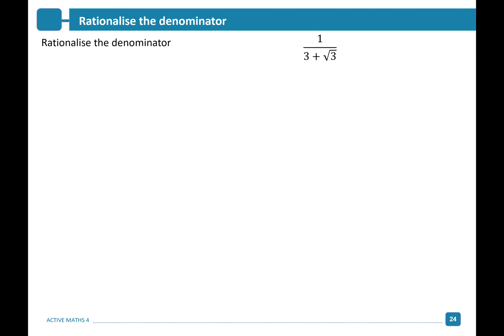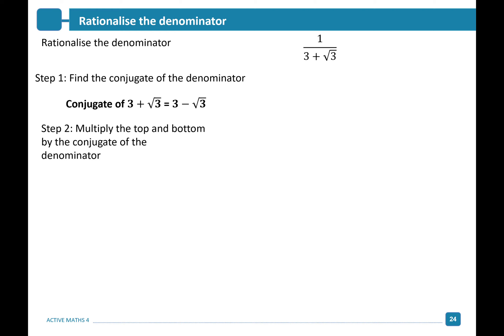Let's try another one: rationalize the denominator 1 over 3 plus root 3. When you have two terms on the denominator, the first thing you must do is find the conjugate of your denominator. The conjugate of 3 plus root 3 is equal to 3 minus root 3. We now multiply the top and bottom by the conjugate of the denominator, giving us 1 times 3 minus root 3 over 3 plus root 3 times 3 minus root 3.